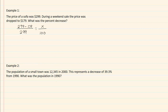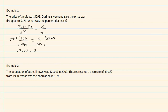So we have two ninety-nine minus a hundred and seventy-nine, which gives us a hundred and twenty over two ninety-nine, equal to x over a hundred. Now we're going to multiply by our common denominator — our two ninety-nines will cross off, and our hundreds will cross off, giving us twelve thousand equal to two hundred and ninety-nine x. Divide by two hundred and ninety-nine, and we get x equals forty point one three three seven percent.